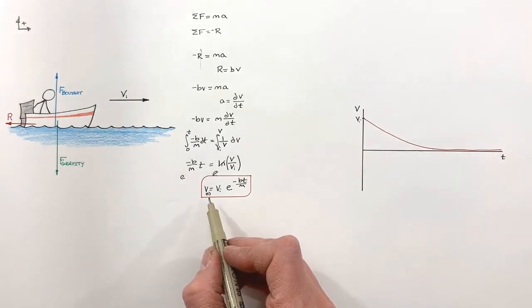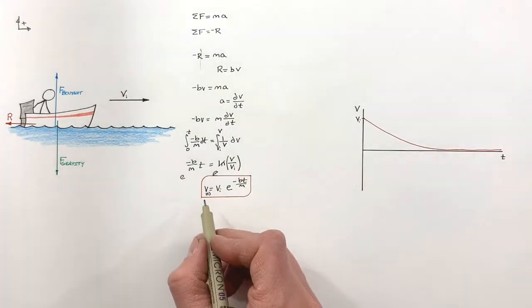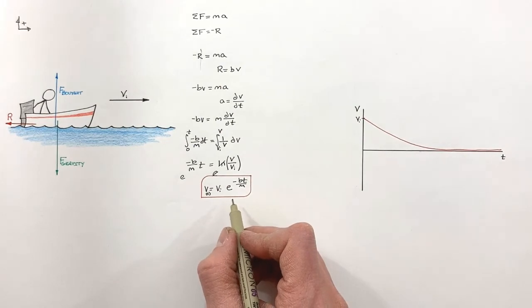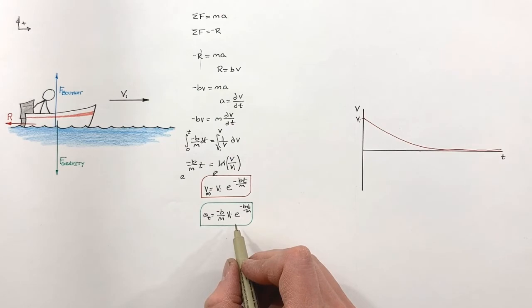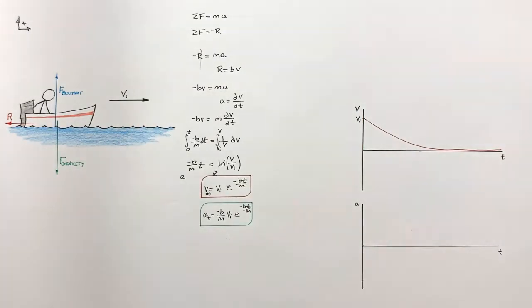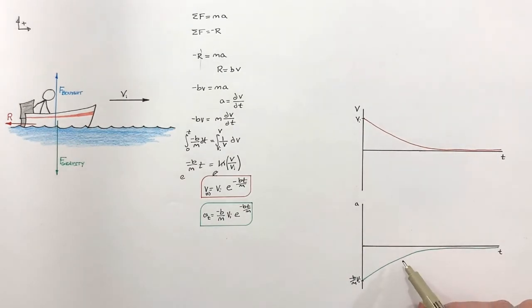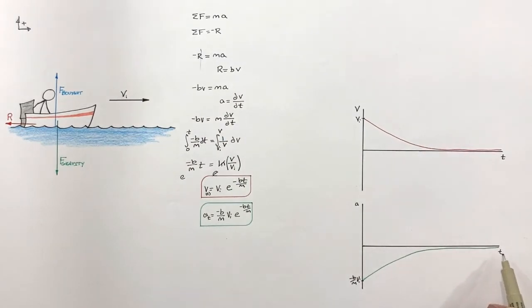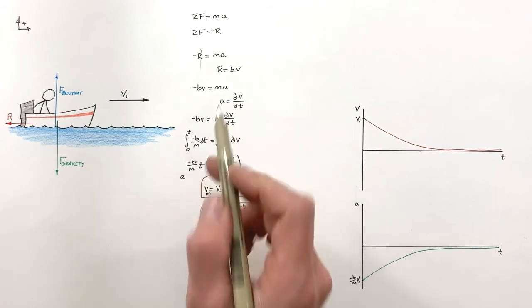To find acceleration as a function of time, we take the derivative of v(t) with respect to time, giving a(t) = −(b/m) · vi · e^(−bt/m). Graphing this, the initial acceleration is negative — opposite to the direction of velocity — confirming the boat is slowing down. As time goes on, the velocity decreases, the force decreases, and the acceleration also approaches zero, consistent with the equation showing that acceleration and velocity are proportional.